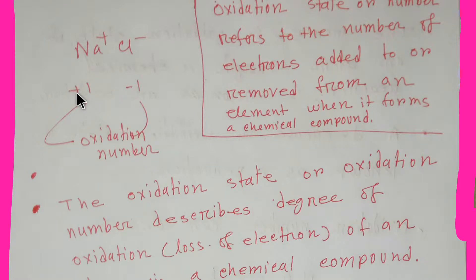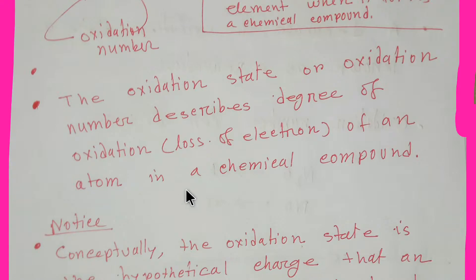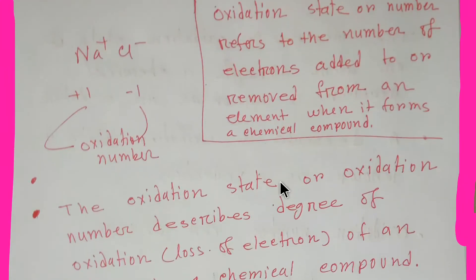Another definition: oxidation state or oxidation number describes the degree of oxidation — that is, the loss of electrons — of an atom in a chemical compound. Oxidation state may be positive, negative, or a fraction.